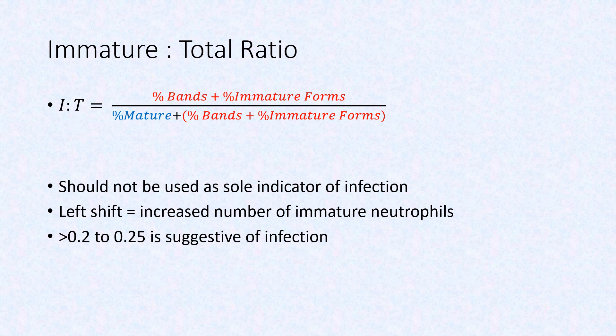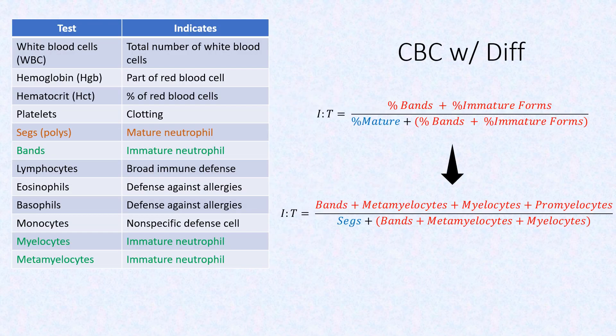The main challenge comes in determining what values are important and where they go. A complete blood count with differential is needed to determine the presence of each type of white blood cell. The differential means the lab counts each different type of white blood cell and immature blood cells, reported as a percentage. The CBC will report all of these values, and the provider will need to determine which are mature and immature neutrophils and properly input them into the formula.